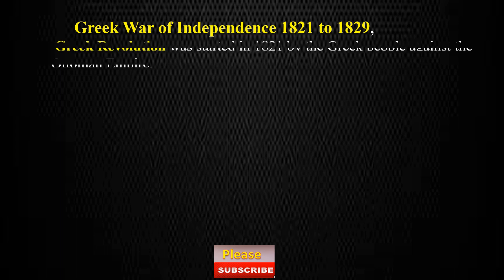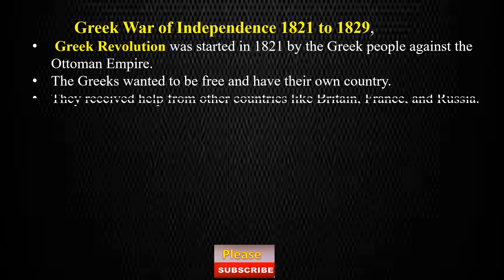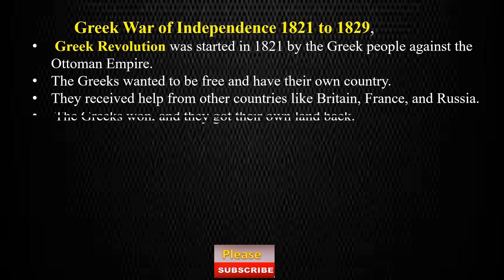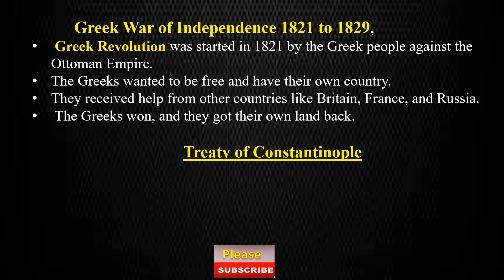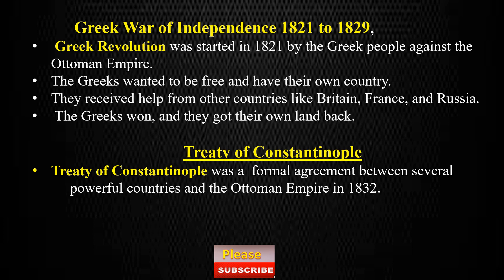The Greek War of Independence lasted from 1821 to 1829. The Greek Revolution was started in 1821 against the Ottoman Empire. The Greeks wanted to be free and received help from Britain, France, and Russia — and they won, getting their own land back. The Treaty of Constantinople was a formal agreement between several powerful countries and the Ottoman Empire in 1832. It recognized the efforts of the Greek people who had fought for their independence from Ottoman rule and led to the establishment of the modern Greek state.